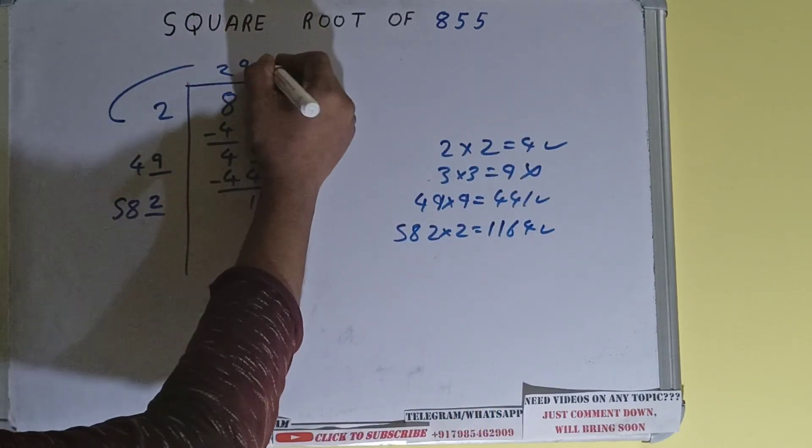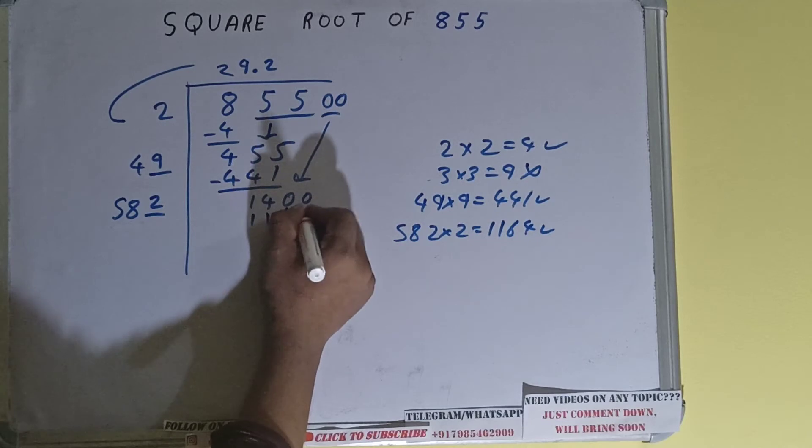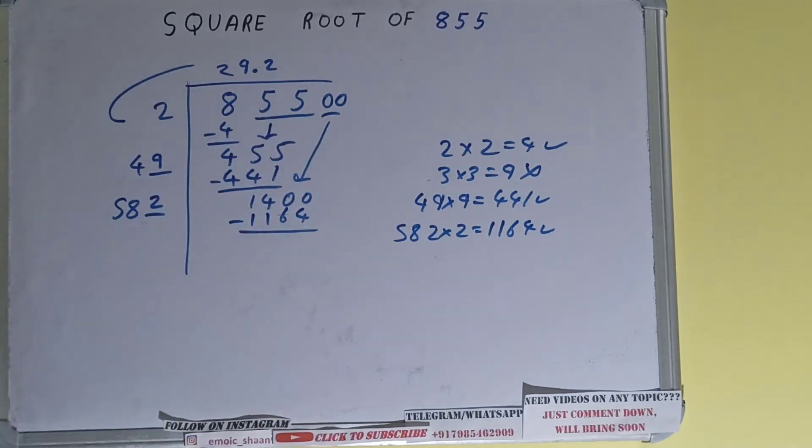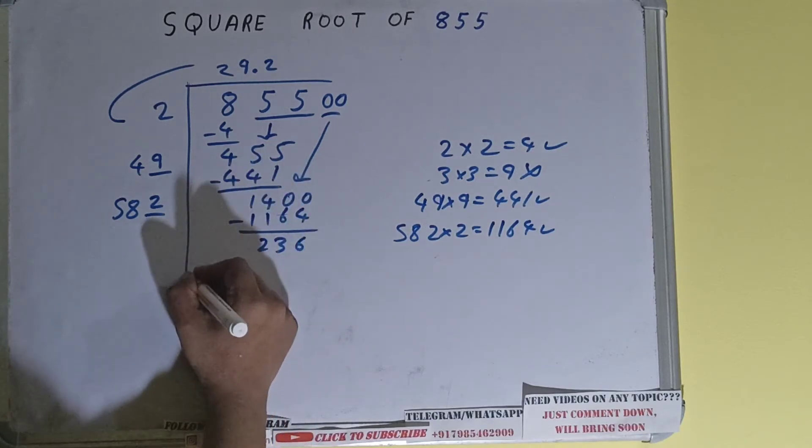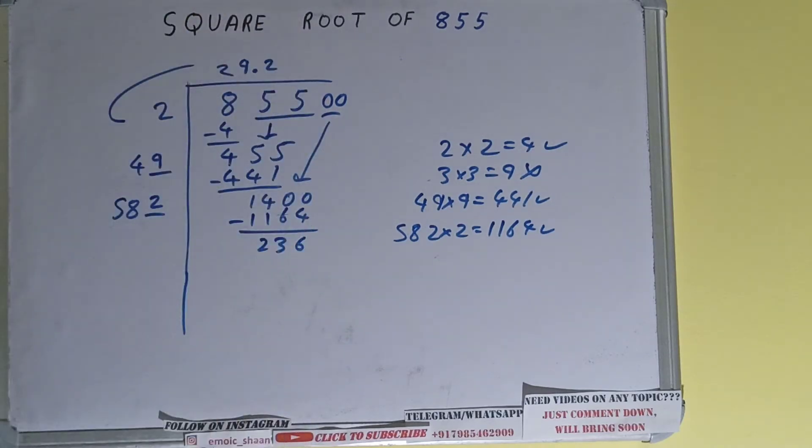So 2 here and 2 here, 1164. Subtract it and 236 will be left. Now 582 into 2, so add both. 582 plus 2 will be 584.